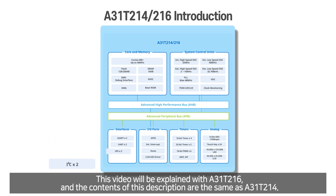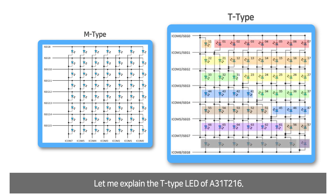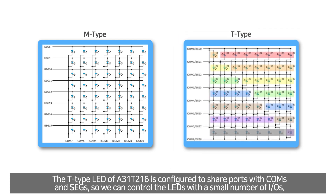This video will be explained with A31T216, and the contents of this description are the same as A31T214. Let me explain the T-type LED of A31T216. The T-type LED of A31T216 is configured to share ports with COM and SAG, so we can control the LEDs with a small number of IOs.